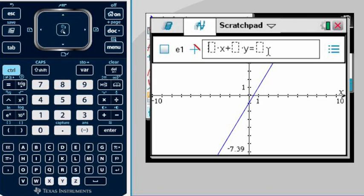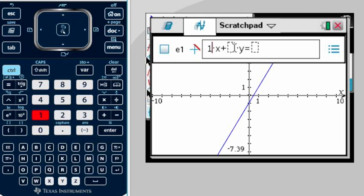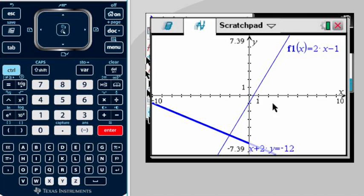Our second equation in standard form is going to be x + 2y = -12. The calculator is specifically asking me for the coefficient for x, so I'll put a 1. Then for y we're going to put 2, and then equals -12. Now they're both graphed. In this case they're the same color because they're in different formats, but you can still see the intersection.